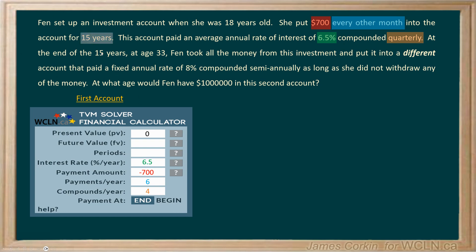She runs this account for 15 years. In the WCLN TVM solver — which is the one you should be using in this course — the periods are tied to the payments per year. Other financial calculators may tie periods to compounding per year, so always make sure you understand which one applies. Here it's payments per year: 6 payments per year multiplied by 15 years gives a total of 90 periods.